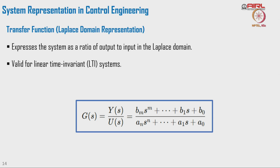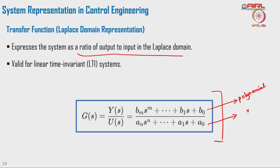This is a particular form of the transfer function — one part is a polynomial equation and another part is another polynomial. When we have a differential equation and apply the Laplace transform, what we get is an algebraic equation. After doing the Laplace transform, we find the ratio of output to input in the Laplace domain, written as Y(s)/U(s), which gives us a ratio of two different polynomials — a numerator and a denominator.